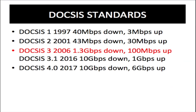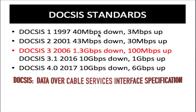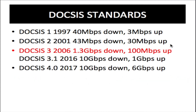The very first DOCSIS in 1997 — DOCSIS 1 — ran at 40 megabits per second down by 3 megabits per second up. Followed by DOCSIS 2 in 2001 with a speed increase to 43 megabits per second down and 30 megabits per second up. Neither of these two DOCSIS versions had channel bonding, so these speeds were the maximum a cable modem could achieve at that time.